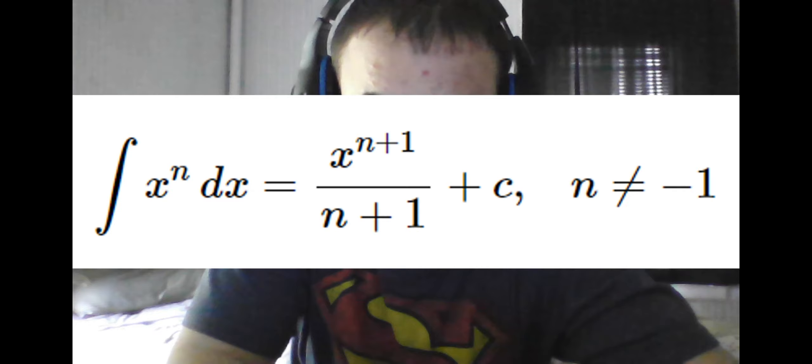We see a caveat to this is that n cannot equal negative 1, because not only will we get division by 0, but also 1 over x is the derivative of something else, which we will see shortly.